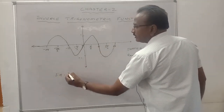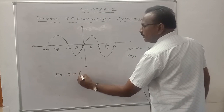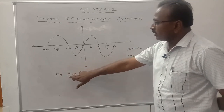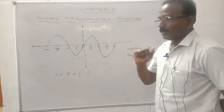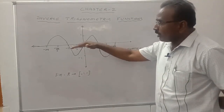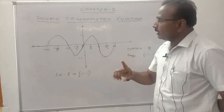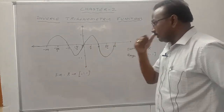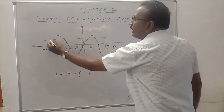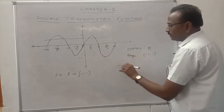The sine function maps from the set of all real numbers to the closed interval minus 1 to 1. However, in this domain, sine is not one-to-one. The geometrical test for a one-to-one function is that a line drawn parallel to the x-axis cuts the graph at only one point. For sine over all real numbers, such a line cuts the graph at more than one point, so sine is not one-to-one.